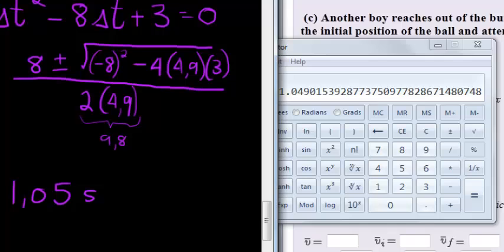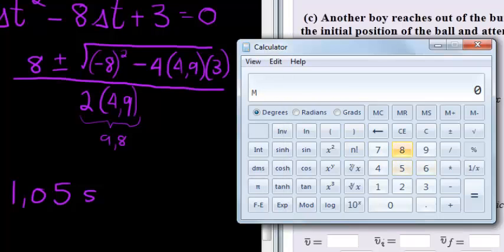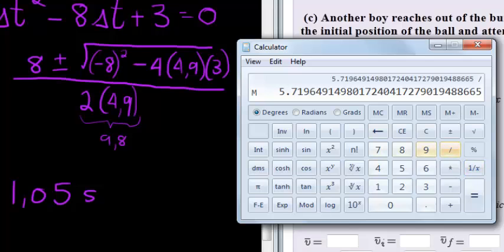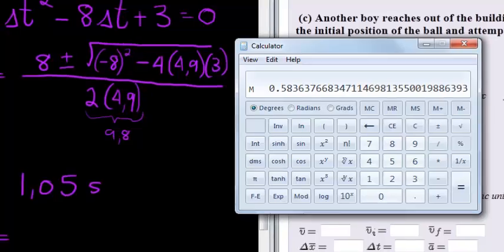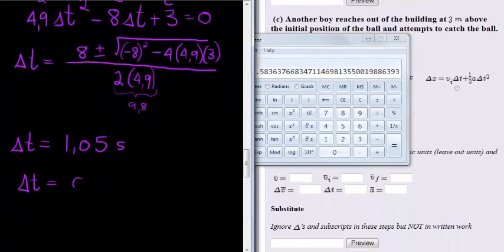And then the next T is going to be when I subtract, so I'm going to say eight minus memory recall gives me five point seven divided by nine point eight is equal to zero comma five eight eight, zero comma five eight seconds.